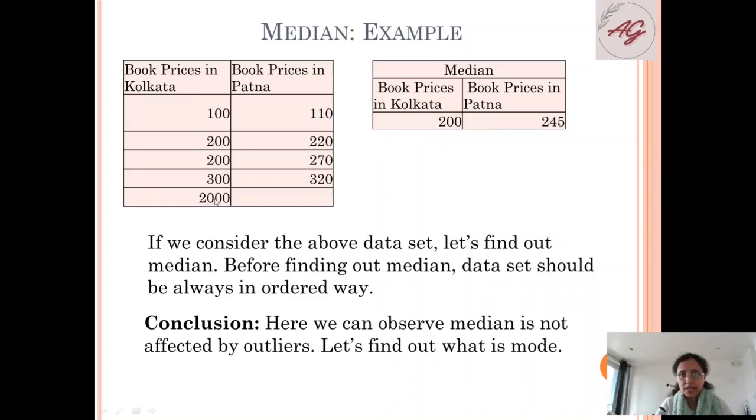Conclusion: here we can observe median is not affected by the outliers. We have the outlier value 2000 but median is not affected because mean was a different value and median is 200, so it's almost near to this Patna variable.